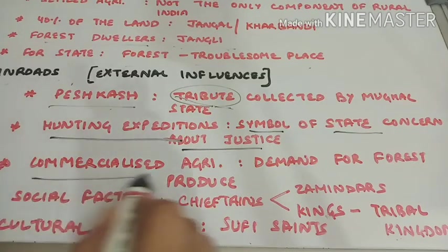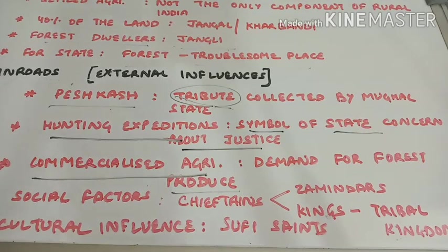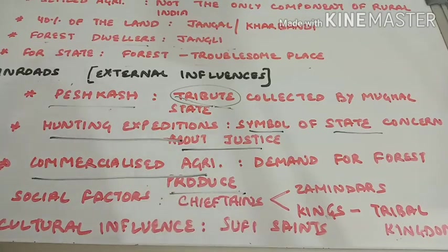The third point is commercialization of agriculture. Because agriculture was expanding, there was demand for different forest produce as well — for example, bee wax, honey, gum lac, etc. These items were provided by the tribes, so this is where tribal life was influenced by life outside of forests. In the 17th century, these forest produce items became important export items as well. Because of this, the tribes had relations not only with the state but also indirect relations with other countries.